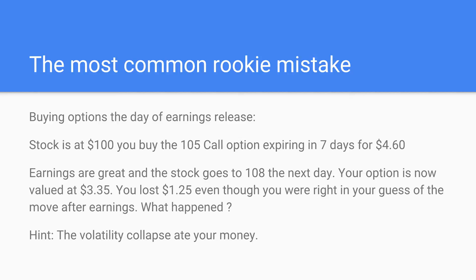Call options are supposed to appreciate in price if the underlying moves up. The stock opens at $108 the next day — an eight percent move, which is a gigantic move for a stock. Fantastic, I hit the jackpot. So I sell my option and it's worth $3.35. What the heck? I just lost $1.25. What happened? We were right, we lost — what happened?